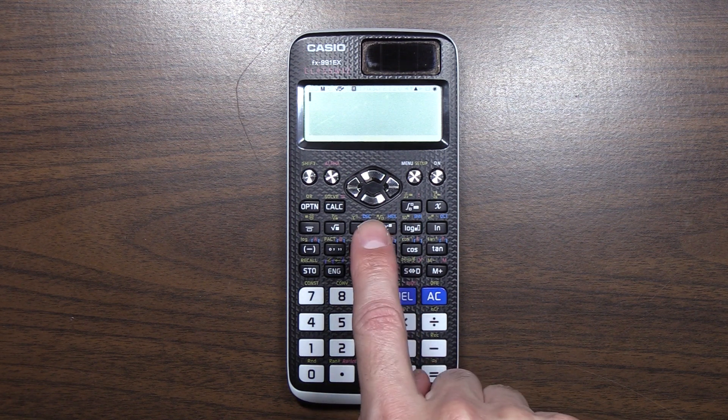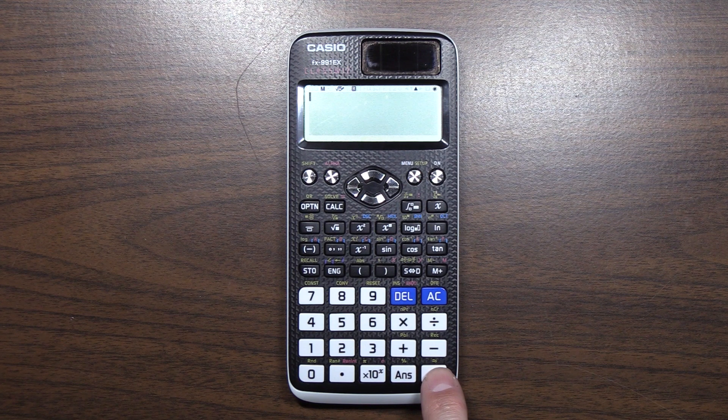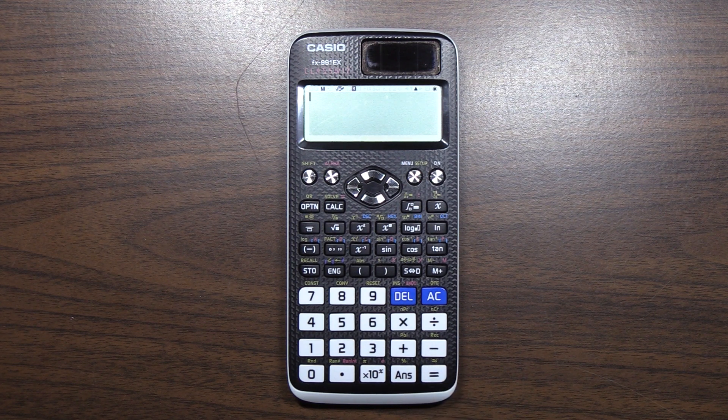On the 991ES, which in America is the 115ES, it doesn't have an approximately equal symbol, but it does function the same way.